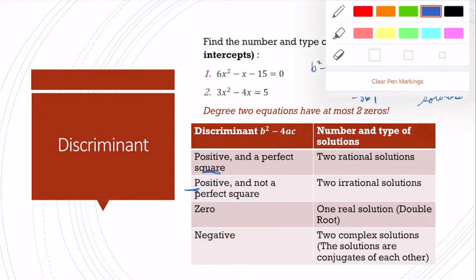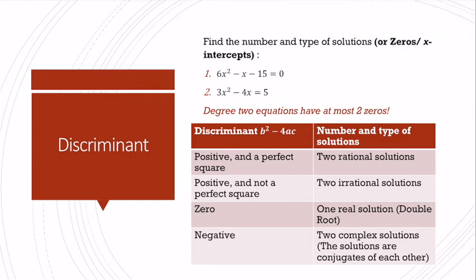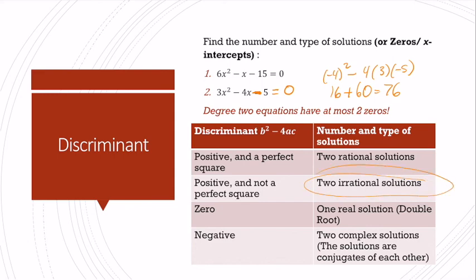Let me clear the board for the next example. I have 3x squared minus 4x equals 5. I need to write this in standard form first, so I subtract 5 from both sides to get 3x squared minus 4x minus 5 equals 0. Now I find b squared minus 4ac: b is negative 4, so that's 16, minus 4 times a times c. That gives 16 plus 60, which is 76. That's not a perfect square, so I'm going to have two irrational solutions.